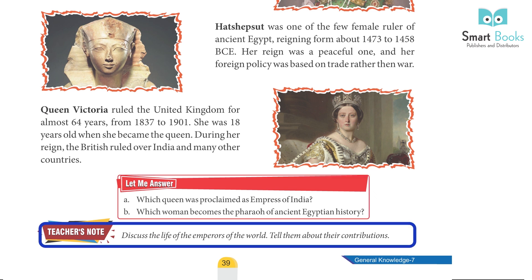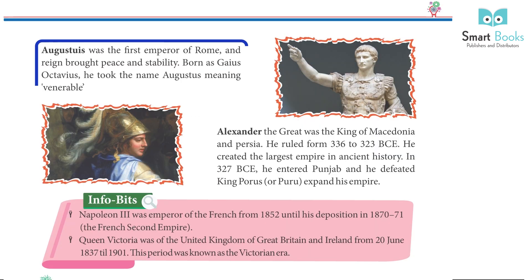Teacher's note: Discuss the life of the emperors of the world and tell students about their contributions. 5. Augustus was the first emperor of Rome, and his reign brought peace and stability. Born as Gaius Octavius, he took the name Augustus, meaning 'venerable.'